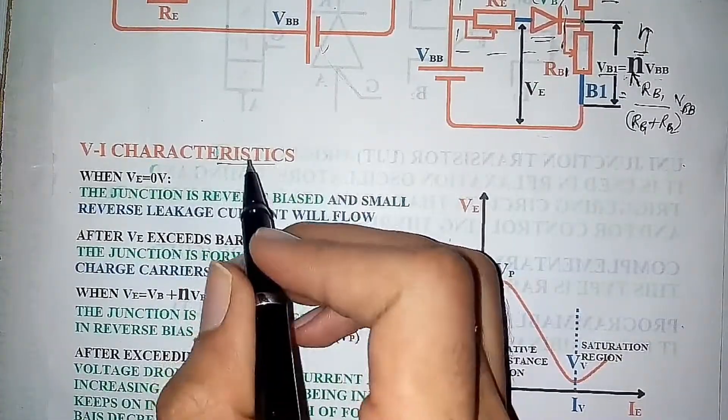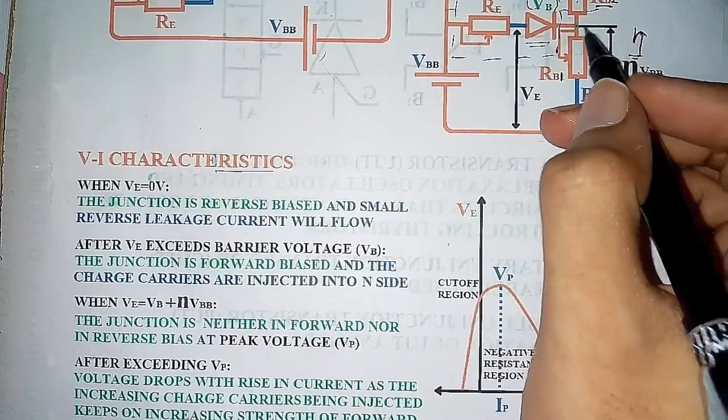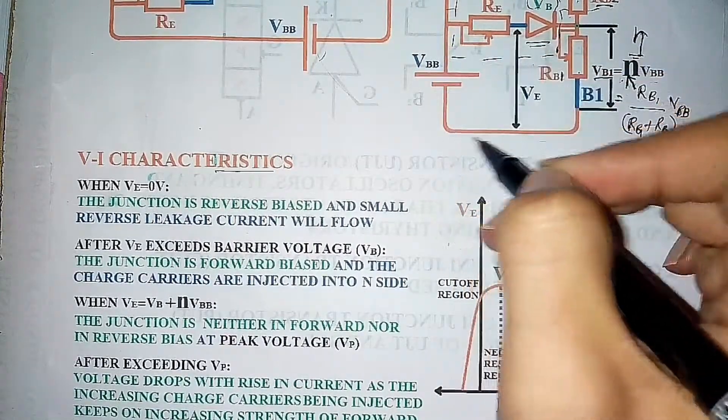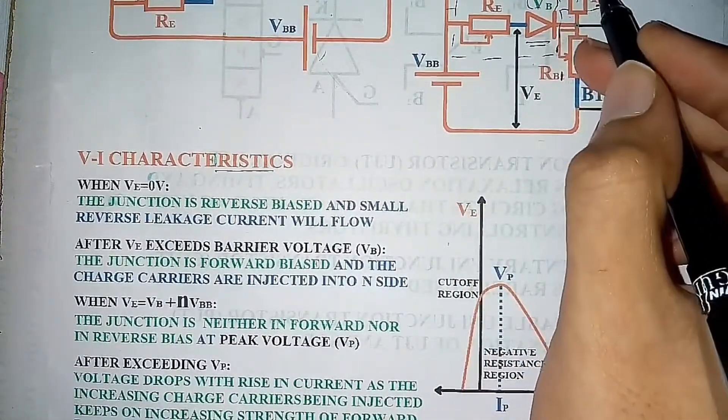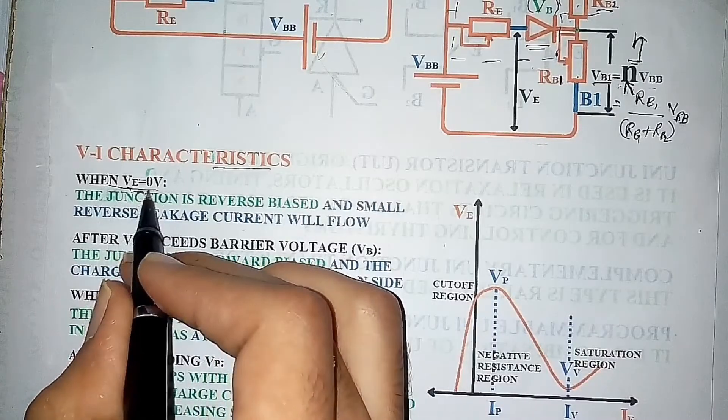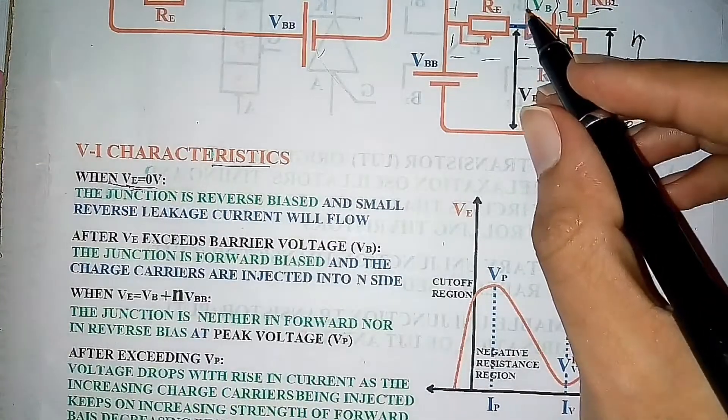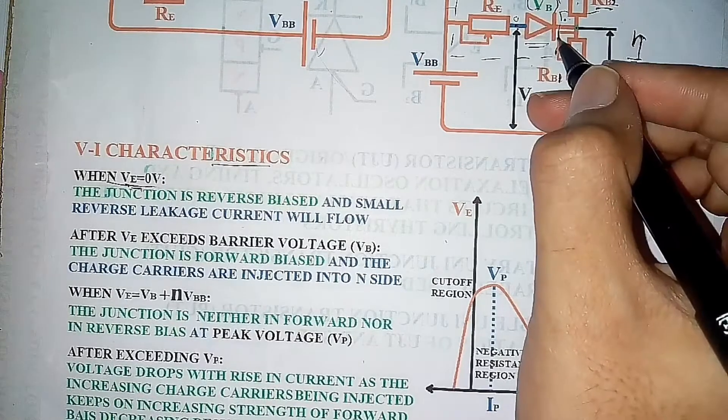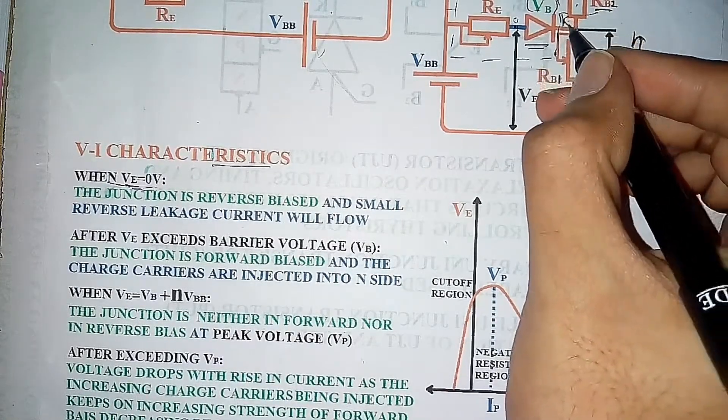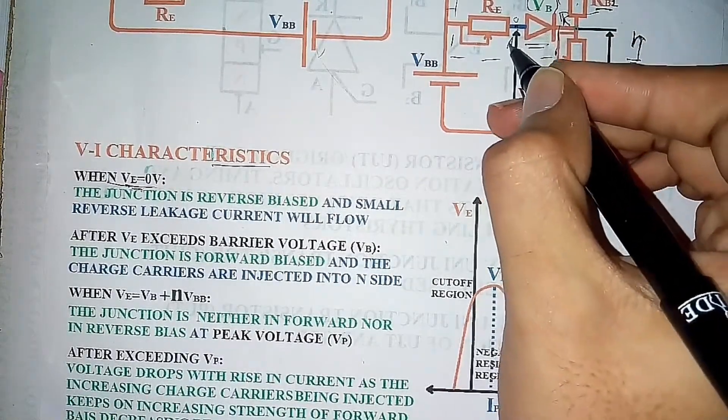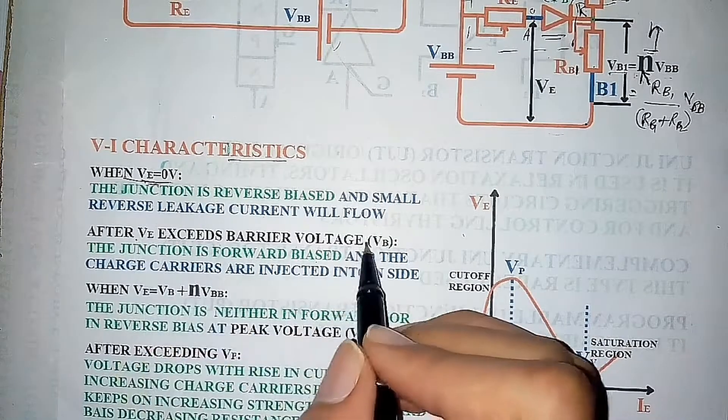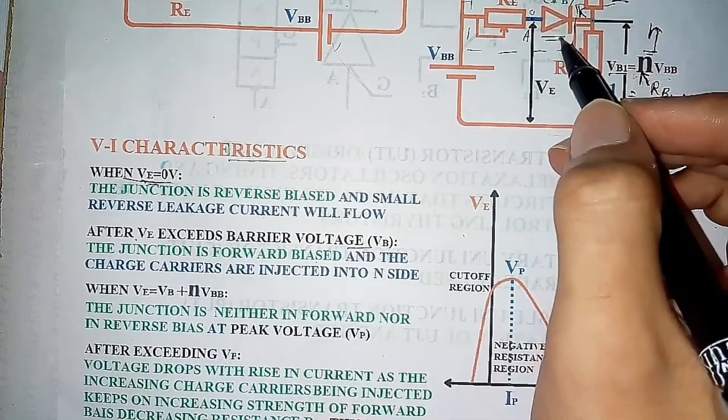Moving to VA characteristics of UJT, we will study the properties of only this part excluding RB2 value. When VE is zero, the diode will be reverse biased because the voltage at cathode is greater than the voltage at anode. After VE exceeds barrier voltage, the junction is forward biased.